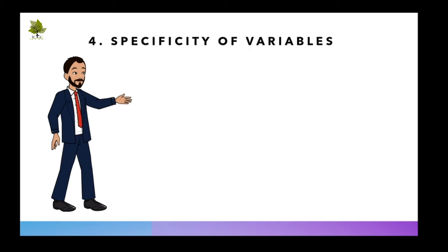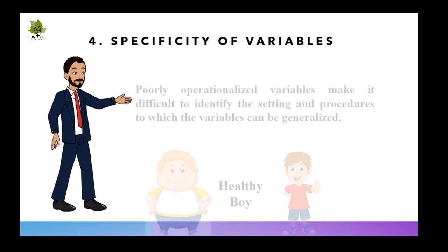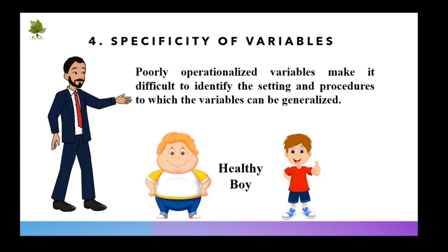The specificity of variables is defined as poorly operationalized variables that make it difficult to identify the setting and procedures to which the variables can be generalized. Like selection treatment interaction, the specificity of variables is a threat to the generalizability of research results regardless of the particular experimental design. Any given study has a specificity of variables — that is, the study is conducted with a specific kind of participant, using specific measuring instruments, at a specific time, and under a specific set of circumstances.